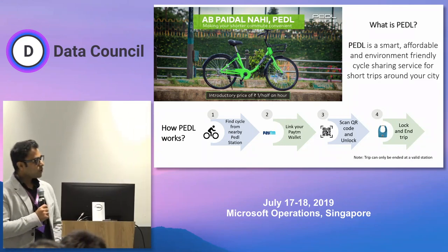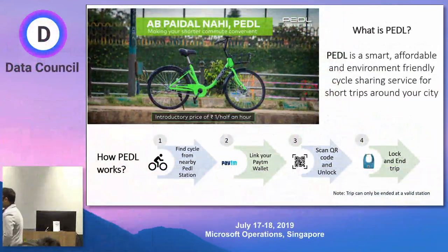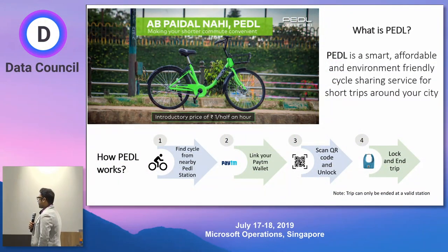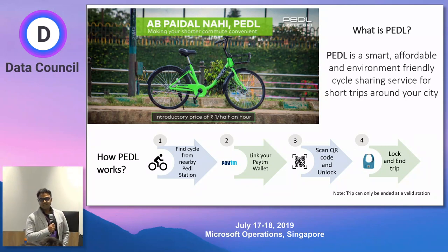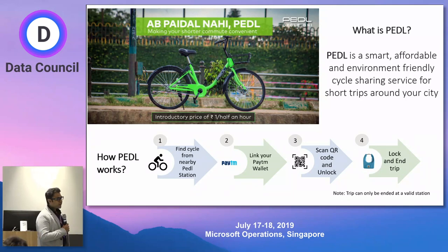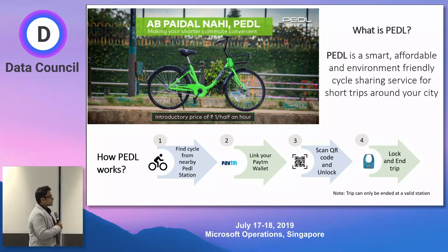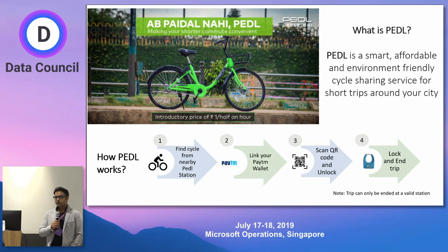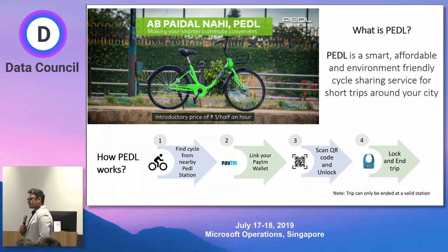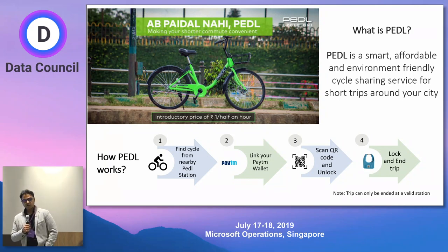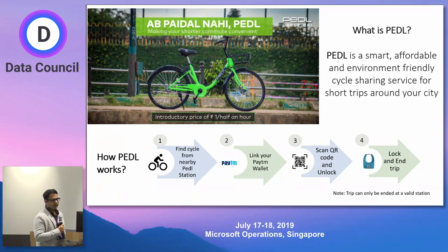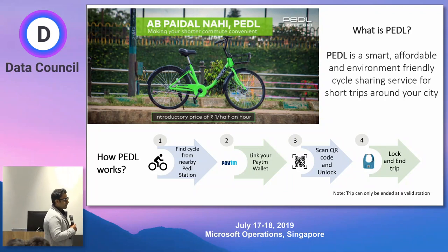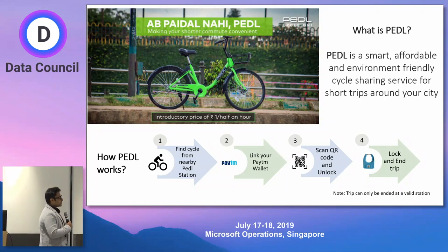You can scan the QR code, link your wallet — here you can link Alipay or PayPal — unlock the bike, have a good ride, and drop the bicycle anywhere. How it is different from bike services in Singapore is that you can pick up anywhere and drop anywhere. But we have learned this kind of business is not really profitable because it has a lot of operational challenges in picking up the bikes, regathering them, and fixing and repairing them.